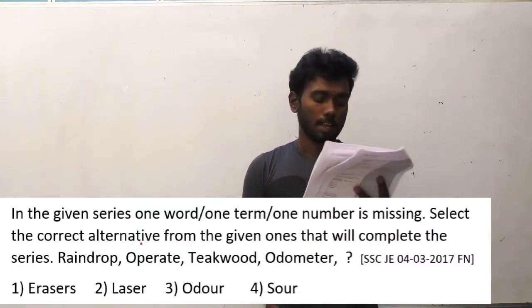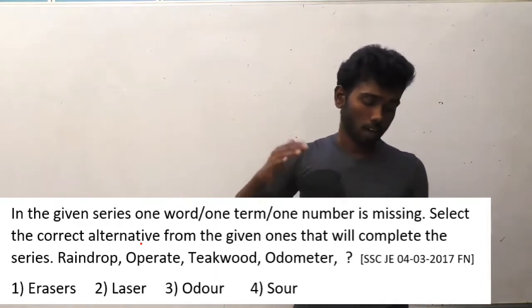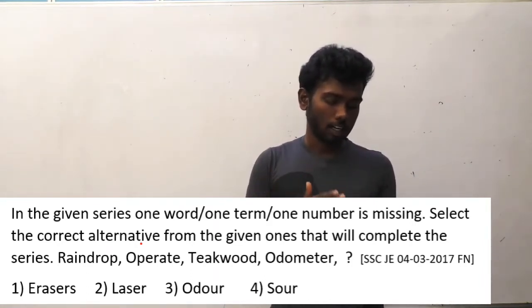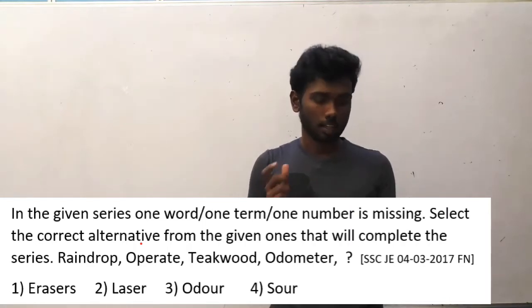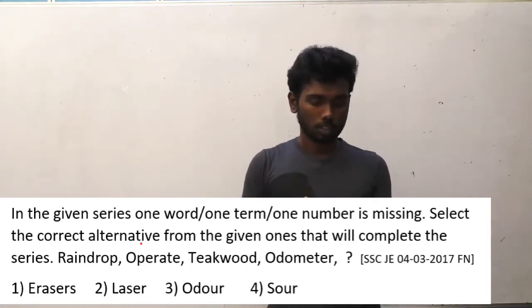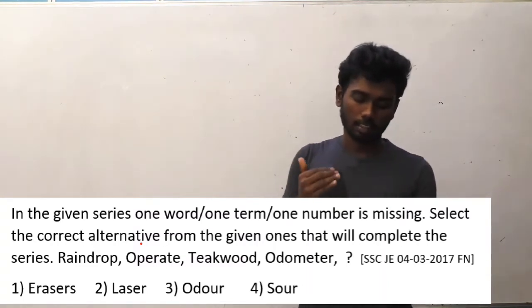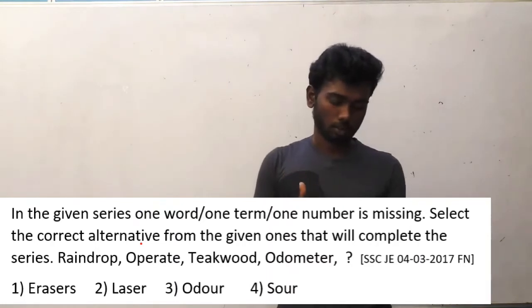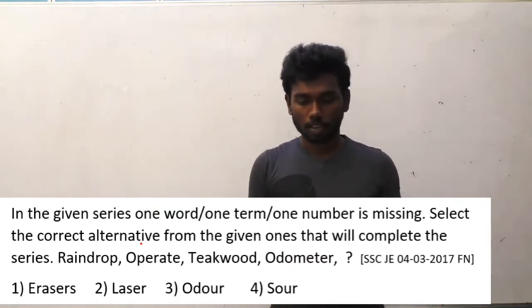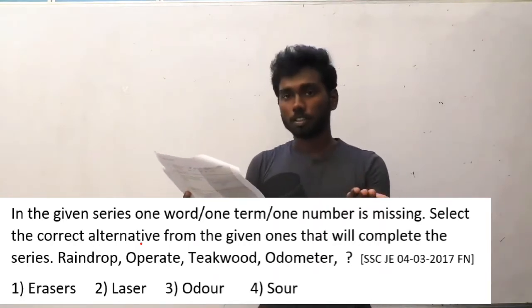Ok students, let us move to the 21st question of SSCJE, asked on 4-3-2017, 4 noon. The question will be flashed on your mobile or laptop screen. I will read out the question and explain the logic. In the given series, one word or number is missing — select the correct alternative to complete the series. The series is RINDROP, OPERATE, TECUDE and ODOMETER. The options are ERASER, LASER, ODUR and SOAR. You can pause the video and try to solve it.